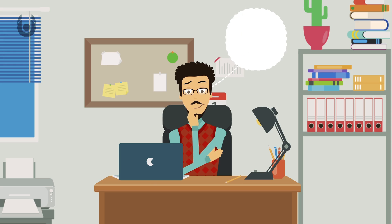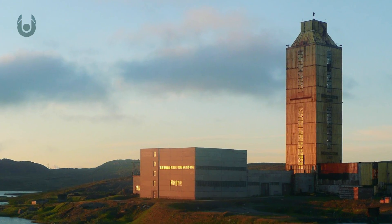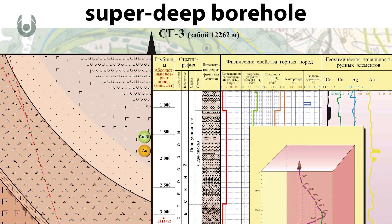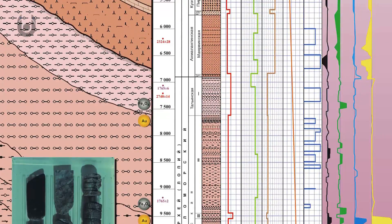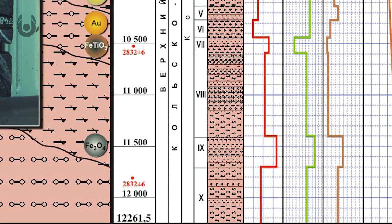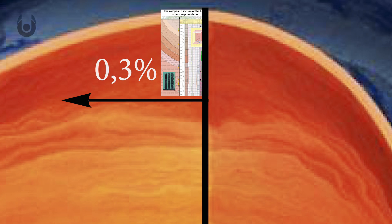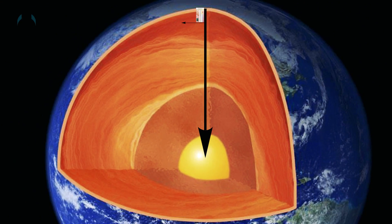While this is a fun experiment to think about, we haven't been able to dig a hole deeper than the Kola Superdeep Borehole in Russia, which is 12 kilometers deep. Even at the bottom of this hole, we are only 0.3% closer to the core than at the surface.